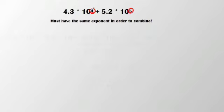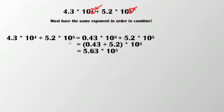So you'll notice here I have 4.3 times 10 to the 4th and 5.2 times 10 to the 5th. My exponents are in different orders. So the first thing I'm going to do is take a look at this problem.